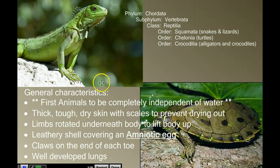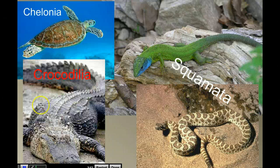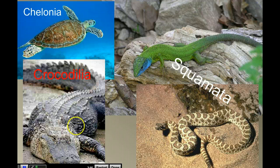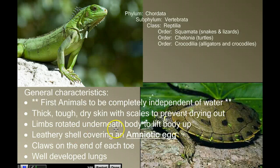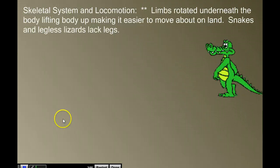You can see this lizard's skin here with its scales. These thick overlapping scales prevent water loss — that's a direct adaptation to being successful on land; we've got to prevent loss of water to the dry environment. Another characteristic, a little bit subtle, is that the limbs are rotated underneath the body to lift the body up and make locomotion on land a little easier.